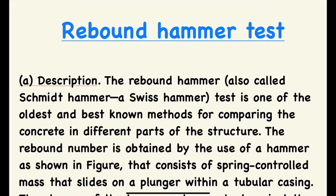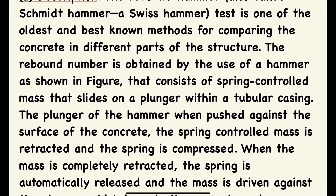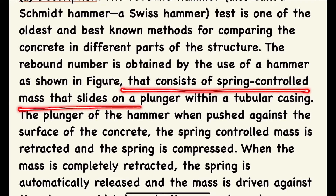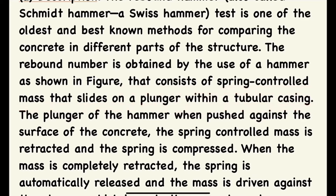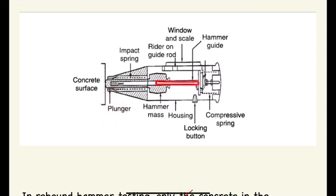The hammer consists of a spring-controlled mass that slides on a plunger within a tubular casing. This is the plunger, and this is the tubular casing.